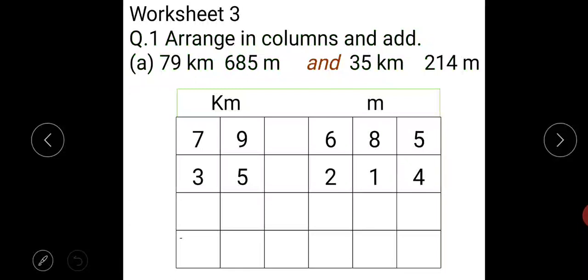First question is arrange in columns and add. First part is we have to add 79 kilometre, 685 metre and 35 kilometre plus 214 metre.